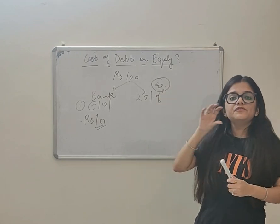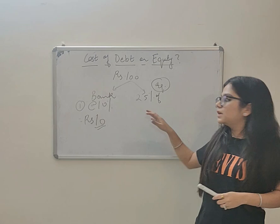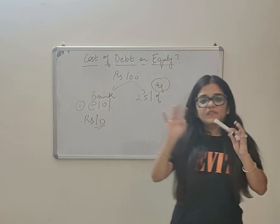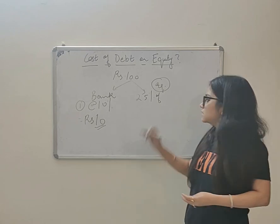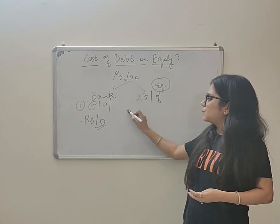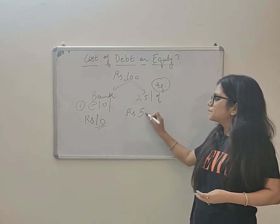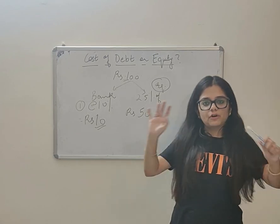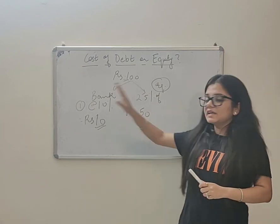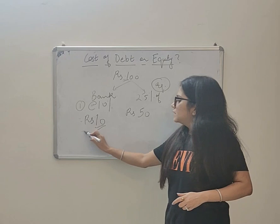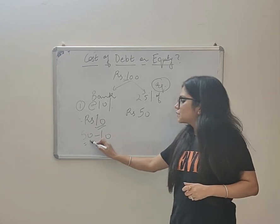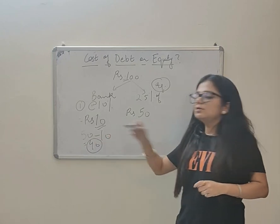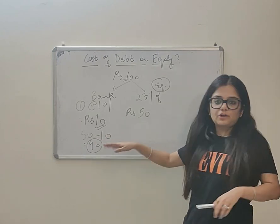Suppose next year this company makes a profit of 50 rupees. In case one, 10 rupees is the interest, so 50 minus 10 is 40. This 40 rupees is the profit of the company - interest minus karke jo bacha, company ka ho gaya.